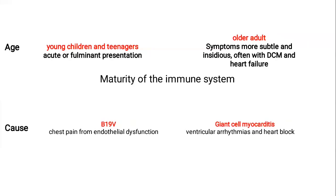There are two surges of myocarditis — at young age and middle age. According to the maturity of the immune system, the clinical presentation may be determined. In younger children and teenagers, this is usually the first exposure to the virus, leading to vigorous immune response, release of a large amount of cytokines, tissue destruction, and a fulminant presentation. In older adults, there is usually previous experience with the virus, leading to tolerance of the immune system, resulting in a milder form of disease and the development of heart failure.